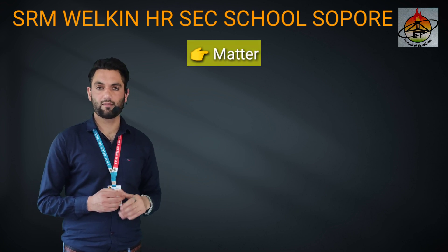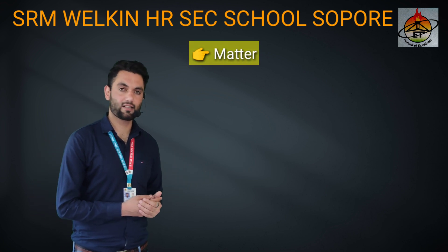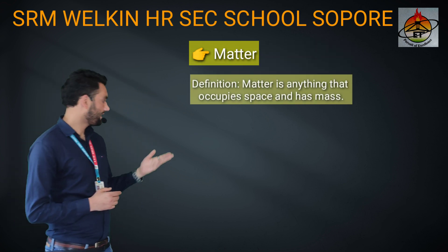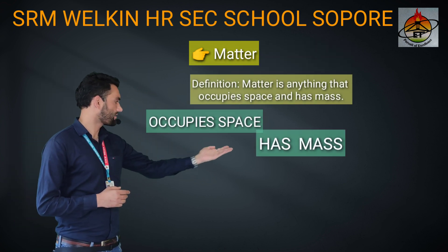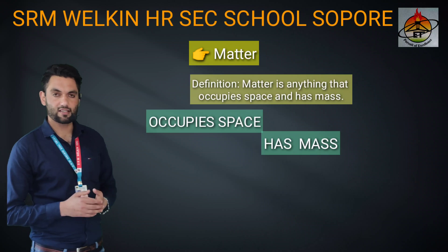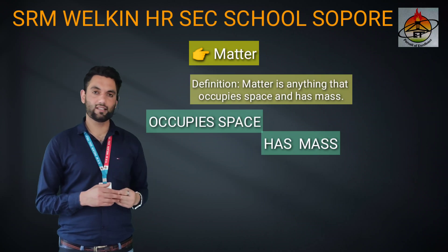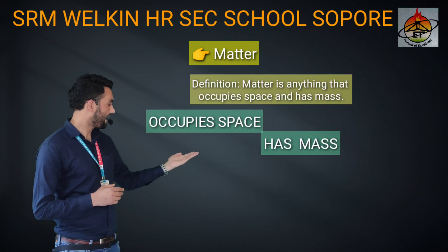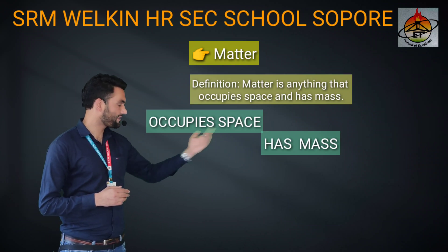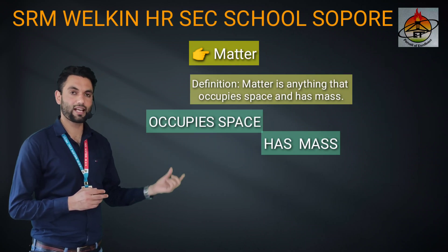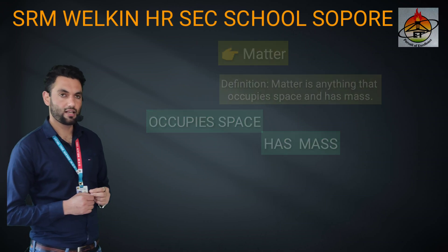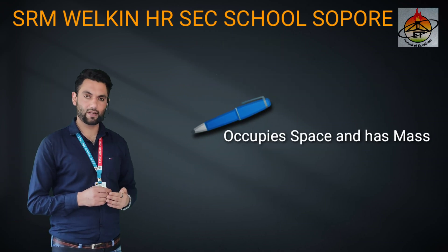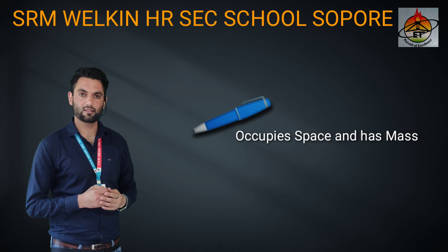What is matter? As you all know, matter is anything that occupies space and has mass. Any thing that has these two properties — it must be occupying some space and it must have some mass — that is what we call matter. For example, if we have a pen, this pen can occupy space and it also has some mass.